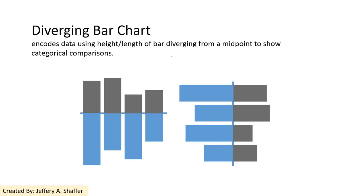Another very similar chart is the diverging bar chart. It is similar to the stacked bar chart, but here the baseline is at the middle. It provides a precise quantitative comparison for each diverging segment, and also allows a relative comparison of the segments — for example, gray versus gray and gray versus blue.